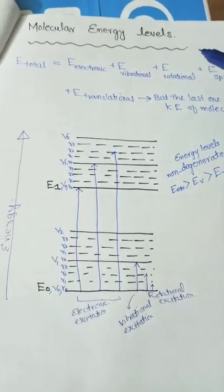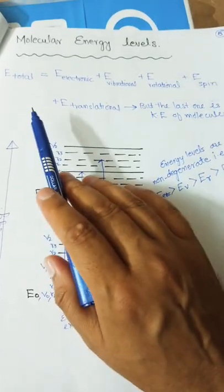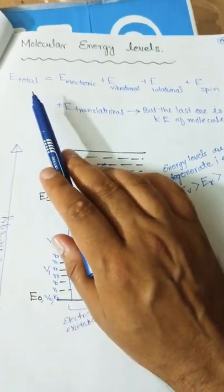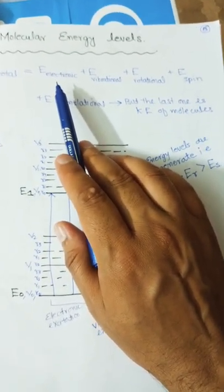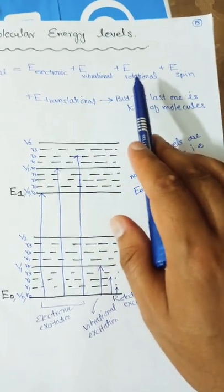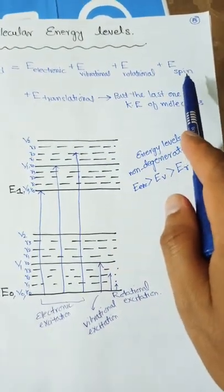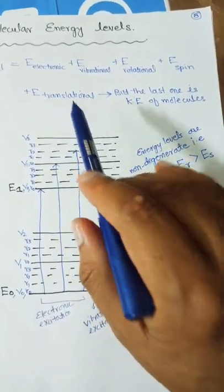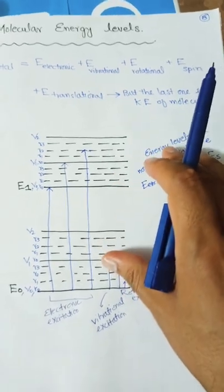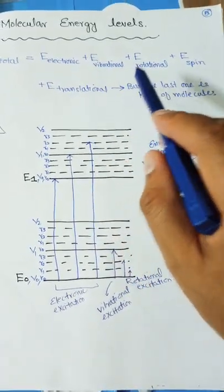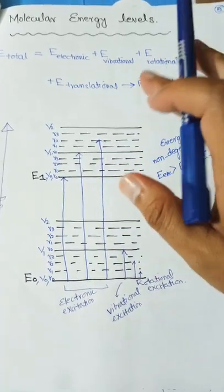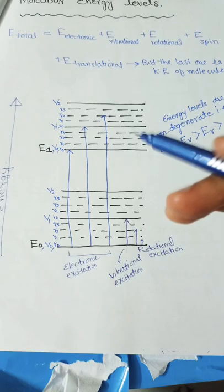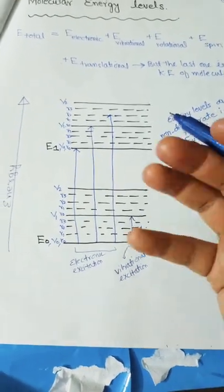Regarding molecular energy levels: the total energy of an atom or molecule consists of electronic energy (E_electronic), vibrational energy (E_vibrational), rotational energy (E_rotational), spin energy (E_spin — nuclear spin), and translational energy (E_translational), which is kinetic energy. The electronic, vibrational, rotational, and spin energies are potential energies present in the molecule; they absorb radiation and become excited.